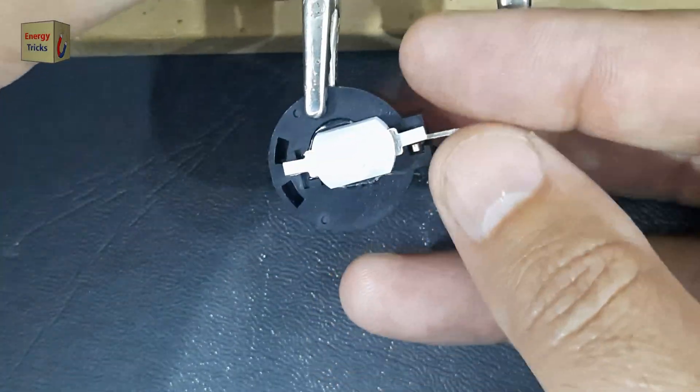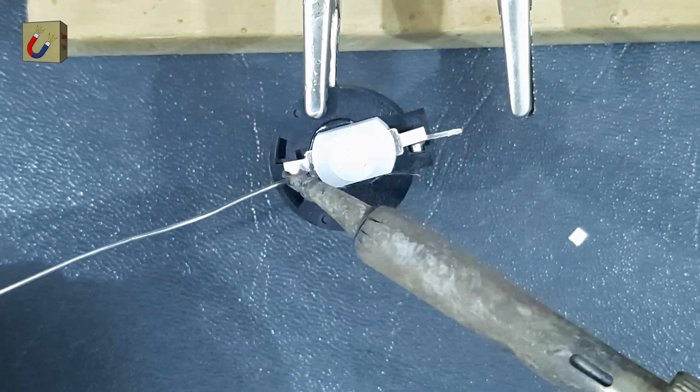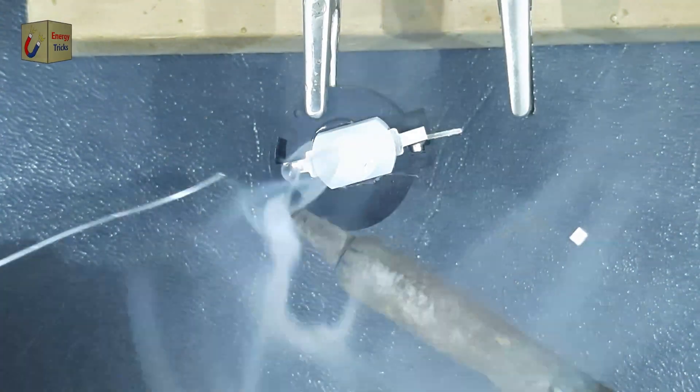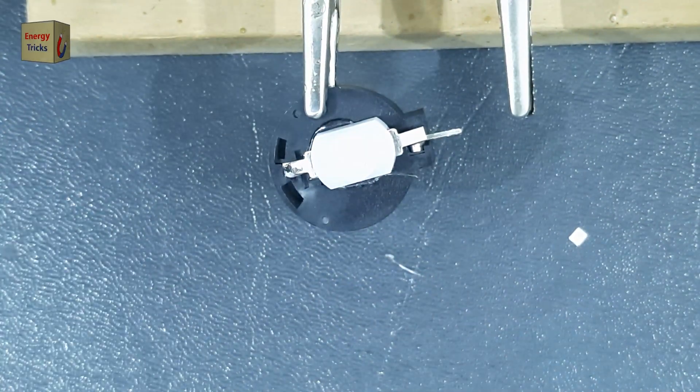Now, I will solder the switch to the negative terminal of the battery holder. This step is crucial as it establishes the electrical connection necessary for the circuit to function properly.